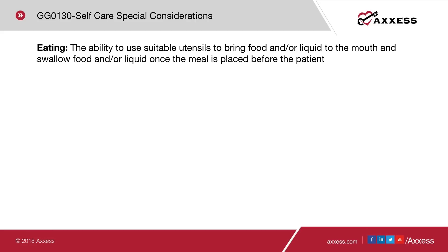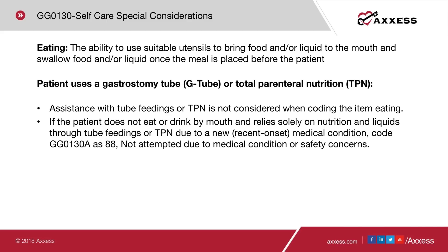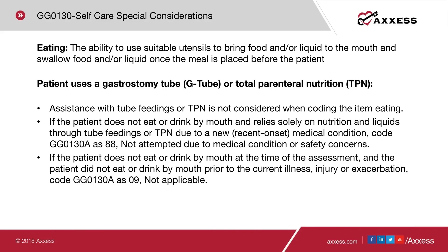A special consideration for eating: it is the ability to use suitable utensils to bring food and/or liquid to the mouth and swallow once the meal is placed before the patient. Assistance with tube feedings or TPN is not considered when coding eating. If the patient does not eat or drink by mouth and relies solely on nutrition via tube feedings or TPN due to a new or recent medical condition, code 88, not attempted due to medical condition or safety reasons. If the patient did not eat or drink by mouth prior to the current illness either, code 09, not applicable.